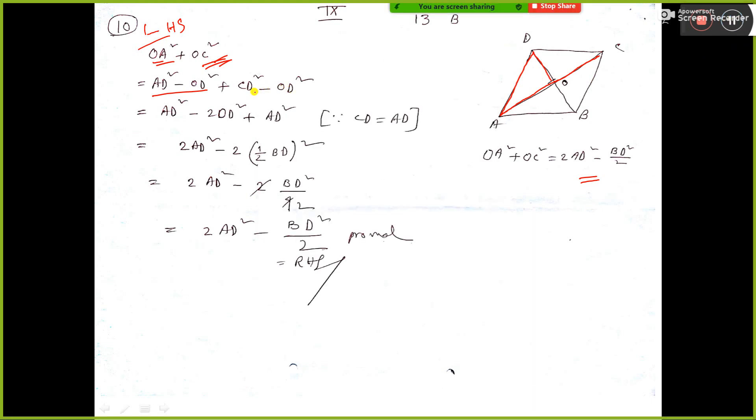This one, OC square is equal to CD square minus DO square.